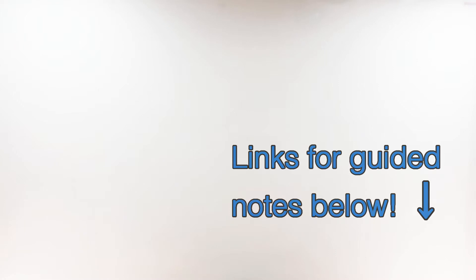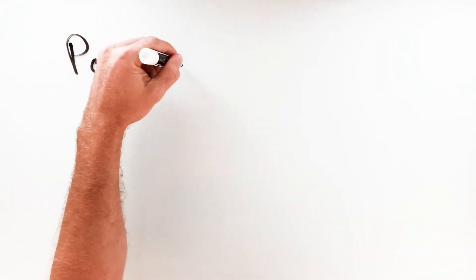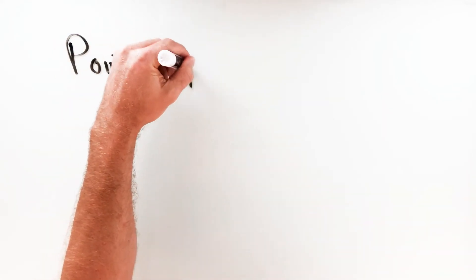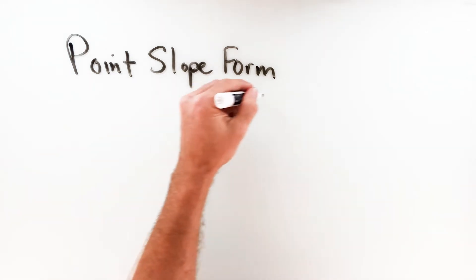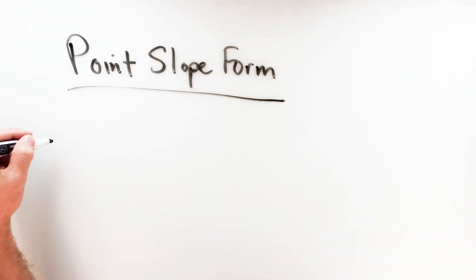The point-slope form equation is definitely not the most common way to write equations of lines and graph lines, but it can be super useful in certain types of problems. The general equation itself may look a little confusing at first, but after a couple of examples I think you'll catch on pretty quickly. So the point-slope form equation — we'll start off with the general form.